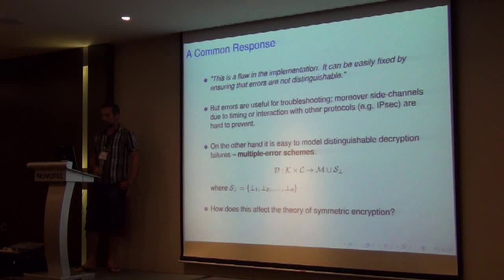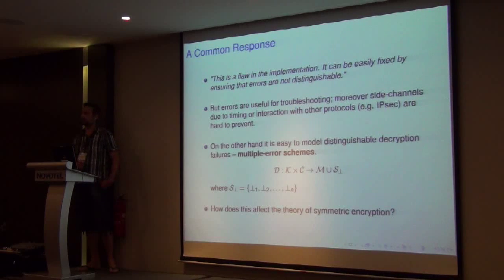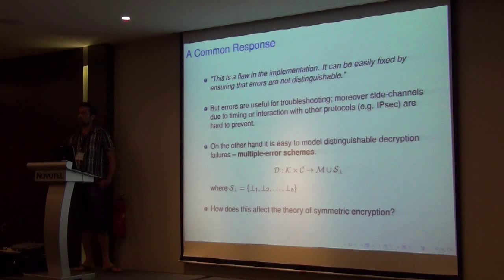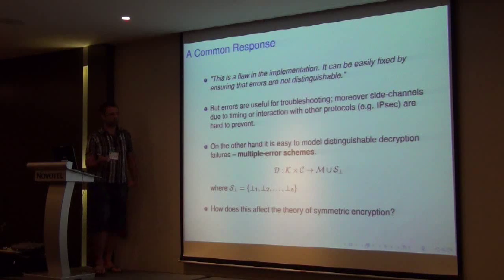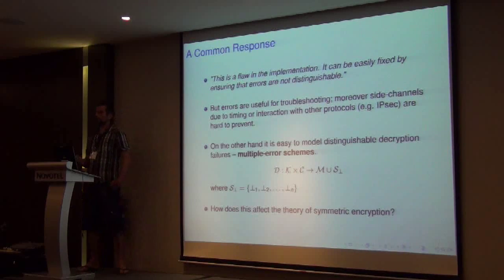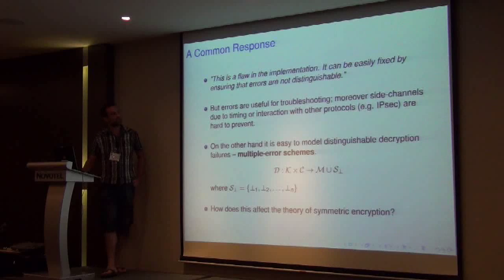On the other hand, it is very easy to account for distinguishable decryption failure attacks in theory, by just redefining the symmetric scheme to return multiple errors. So we let the decryption algorithm return either a message, or instead of one single symbol ⊥, a set of error symbols, which we denote as ⊥-set. But since this technically results in a different object, we may revisit the theoretical results we know about encryption, and see how these change in the multiple errors setting.